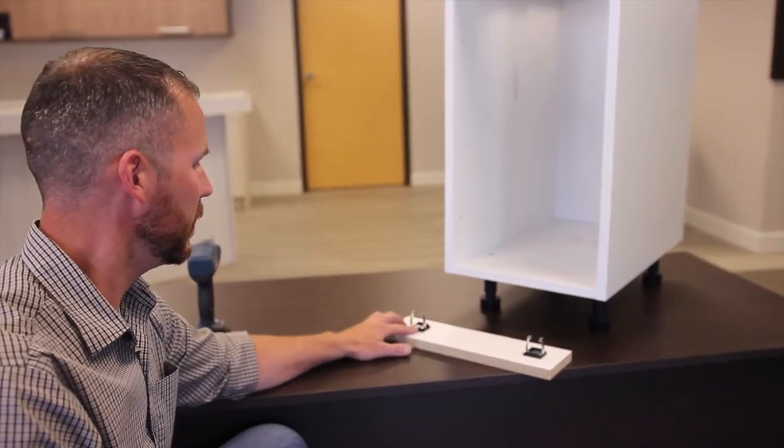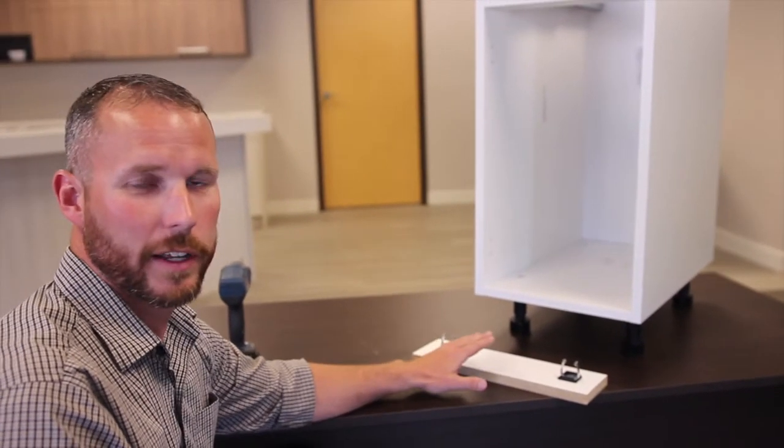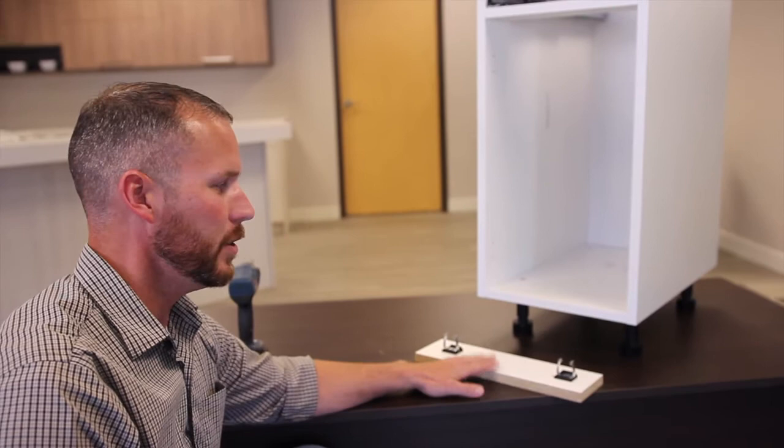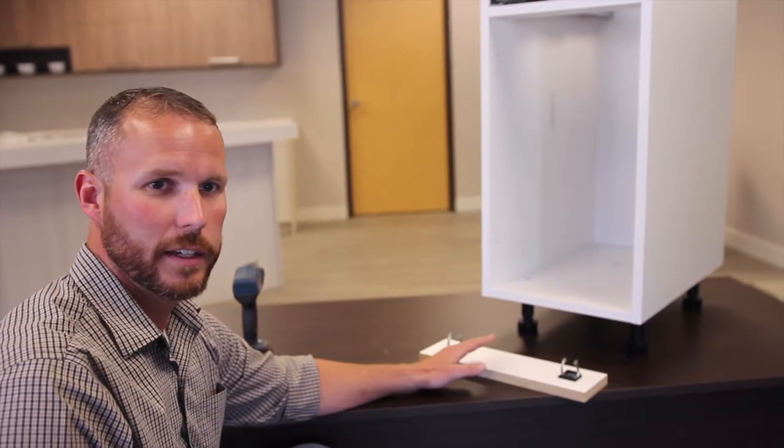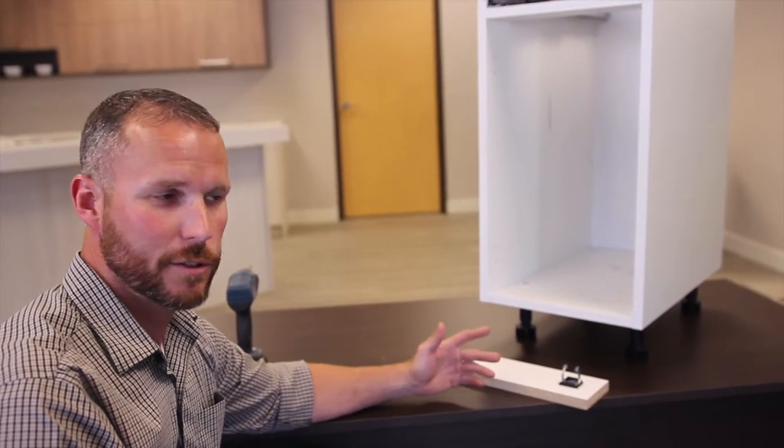Okay, so now that we've got both our mounting hardware in place, we're ready to install it. Now typically on a longer run of cabinets, you don't need to put the clips on every leg. We recommend about every 30 inches or so. Obviously for this case, we've only got the one cabinet, so we've just got the two legs.